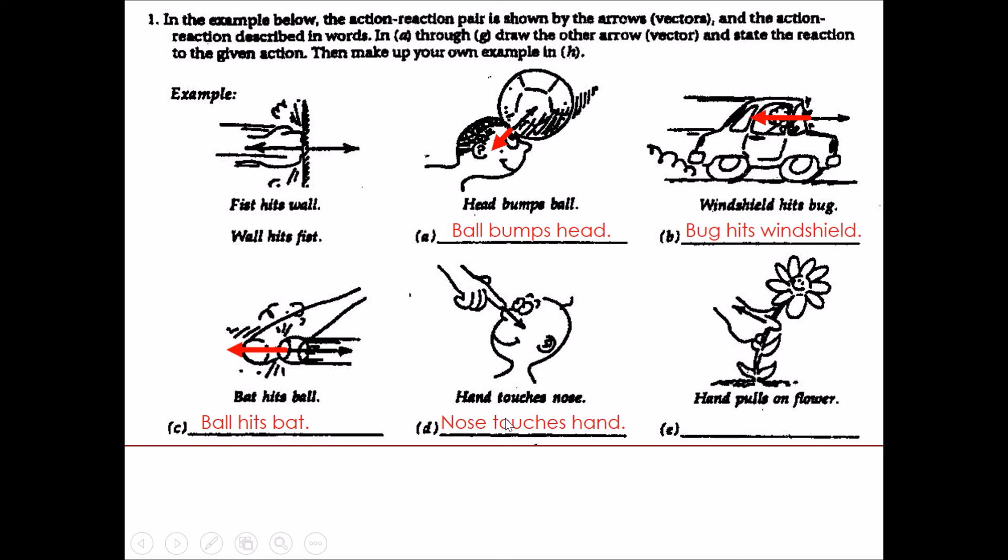Hand touches nose. Nose touches hand. Therefore the arrow would be in this direction like this. Hand pulls on flower. Flower pulls on hand. So the flower will actually be pulling backwards on the hand in an equal and opposite reaction.